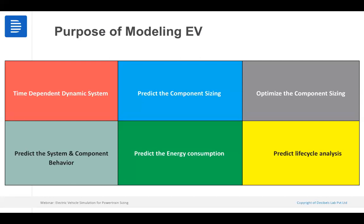Once we have a model we can predict component sizing. Component sizing is not a direct factor — you have to run iterations after iterations to converge on the motor size, battery size, inverter size, or cooling system sizing. We subject the model to various drive cycles, acceleration requirements, and gradability requirements to optimize the component sizes.